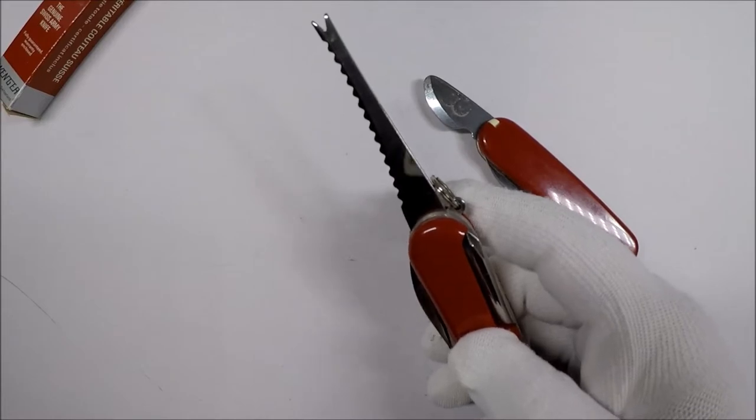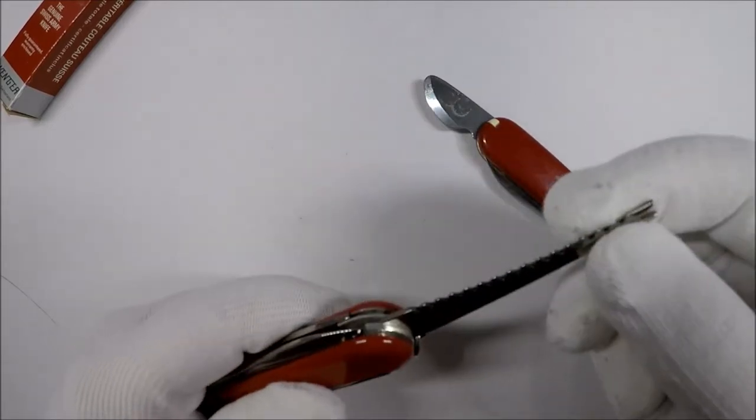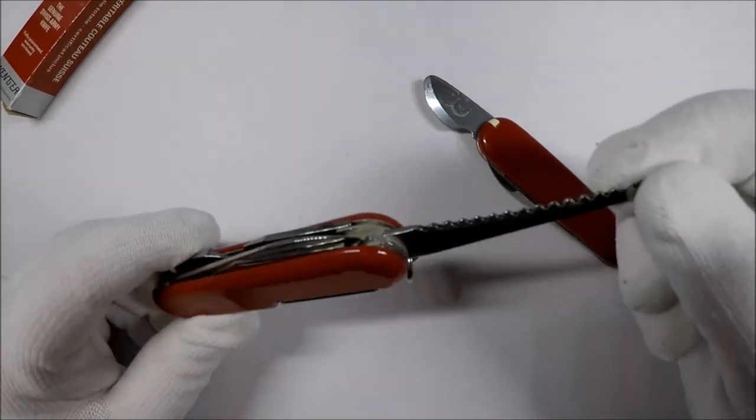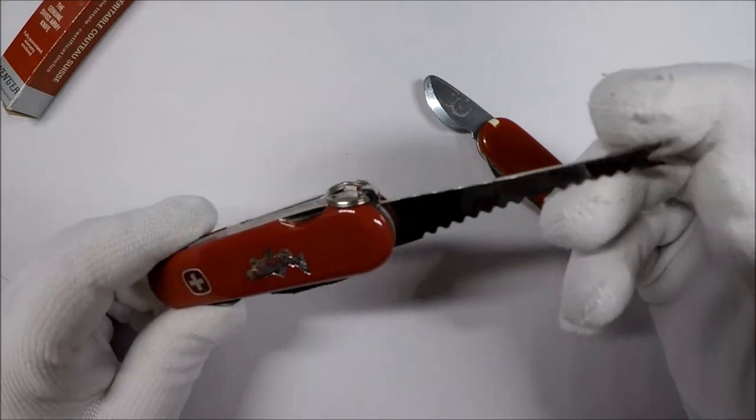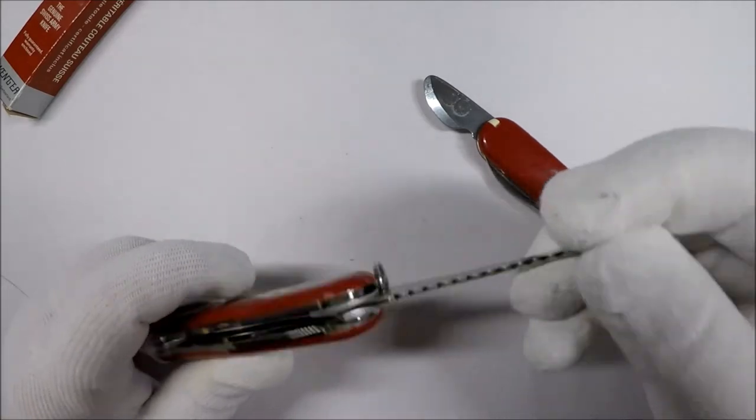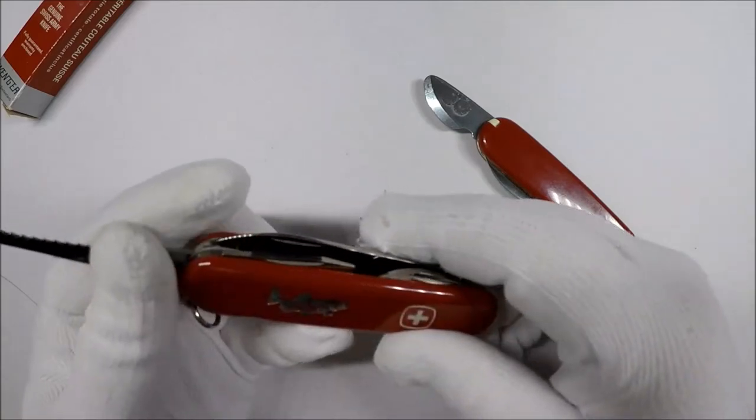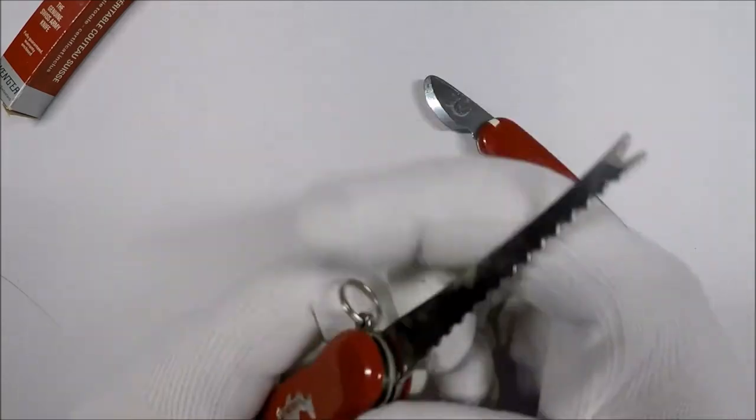I'll include a link in the description for the Swiss Army Knife Wiki page about this so you can check it out. I wonder why the fish scaler is different. I don't know. That's interesting though.